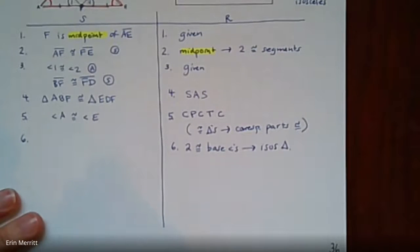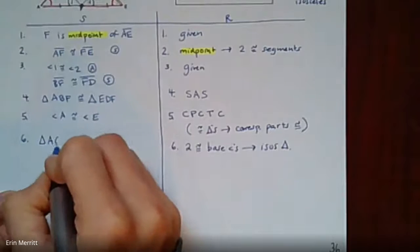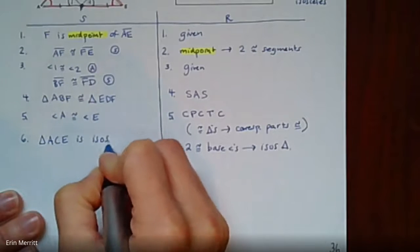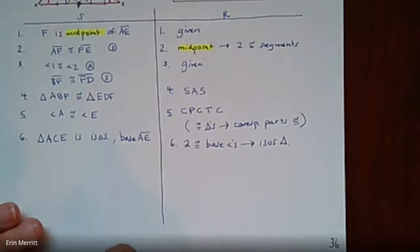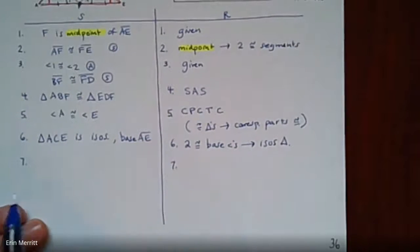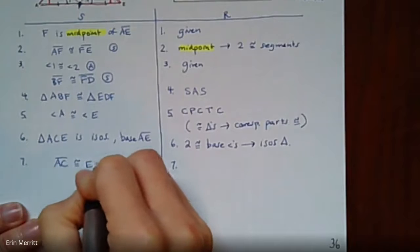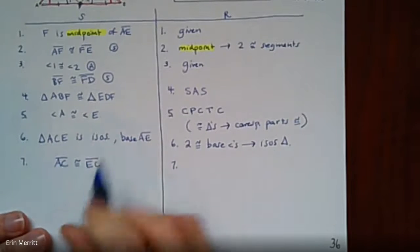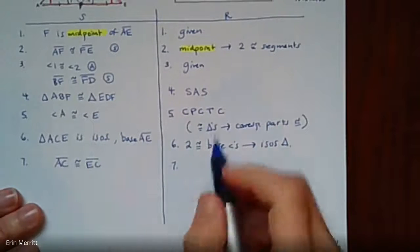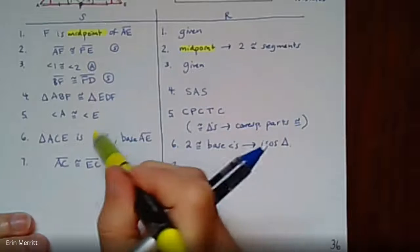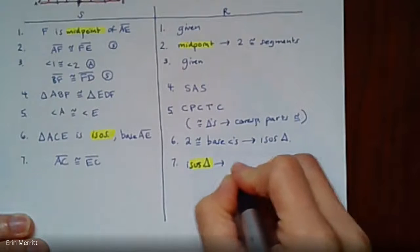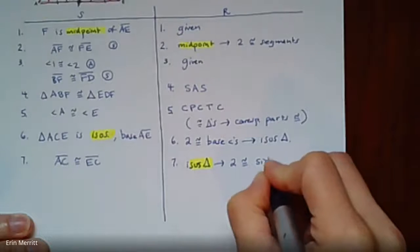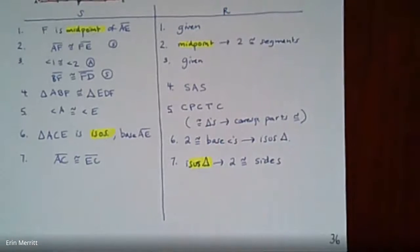Which triangle is isosceles? That would be the big triangle ACE. So triangle ACE is isosceles with base AE. Down to our last step: we prove that AC is congruent to EC — and it's not by CPCTC. CPCTC was used earlier. This is because of the isosceles triangle: an isosceles triangle implies two congruent sides. That finishes our proof.